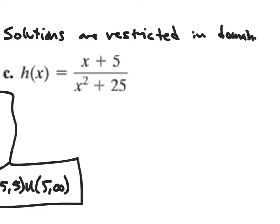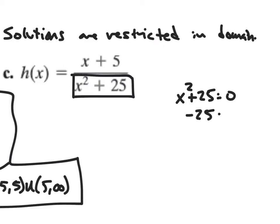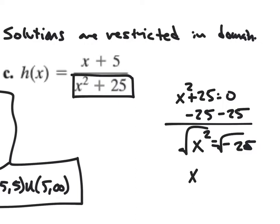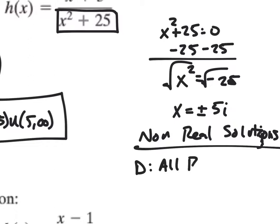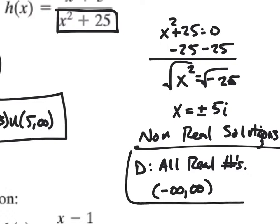On part c, h(x) equals x plus five over x squared plus 25. Setting the denominator equal to zero: subtract 25 from both sides gives x squared equals negative 25. Taking the square root gives x equals plus or minus 5i. This is a non-real solution, so there are no real restrictions in our denominator — nothing can make it undefined. Therefore the domain is all real numbers, or negative infinity to positive infinity.